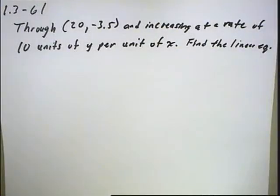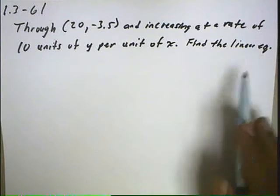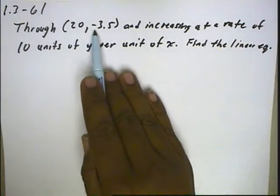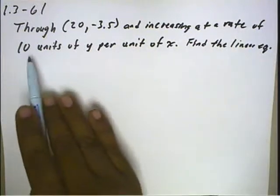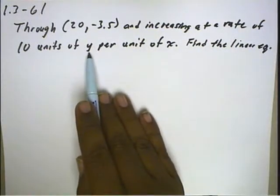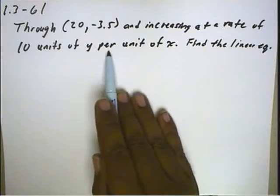Homework problem 1.3, number 61. We want to find the linear equation that goes through the point 20, negative 3.5, and it's also increasing at a rate of 10 units of y per unit of x.